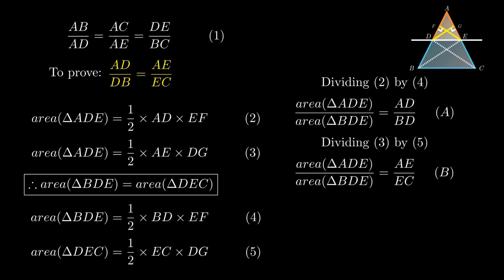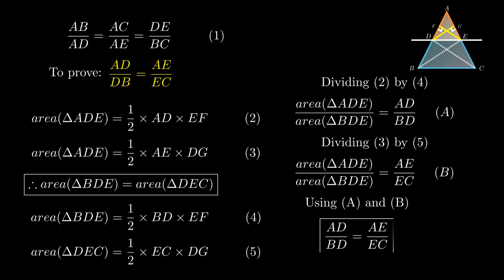As the left-hand side of both equations is equal, therefore using the axiom — things which are equal to the same thing are also equal to one another — we conclude AD upon BD equals AE upon EC. Hence the theorem is proved. So this was it for the video, see you in the next one, thank you for watching.